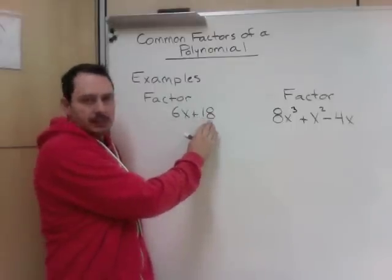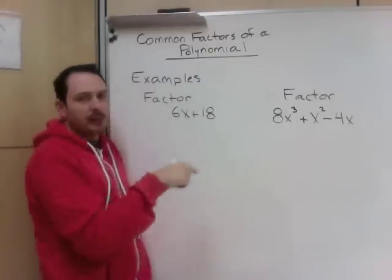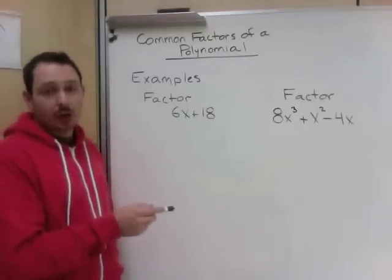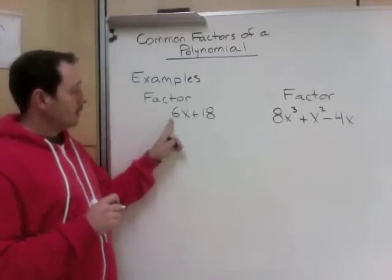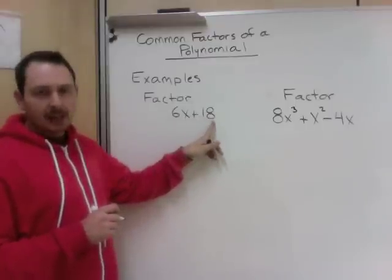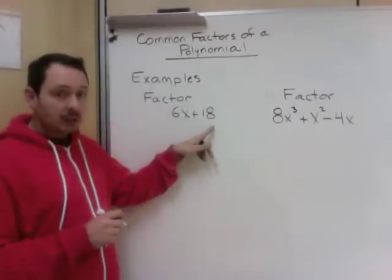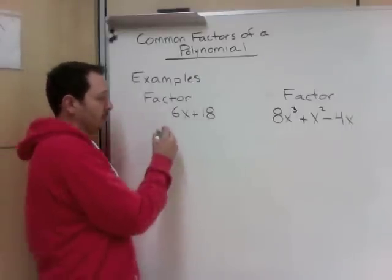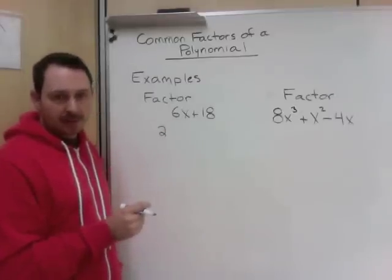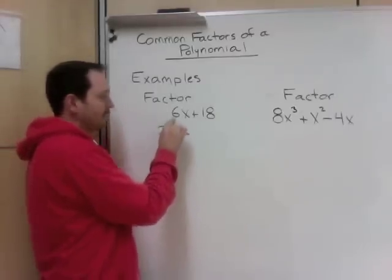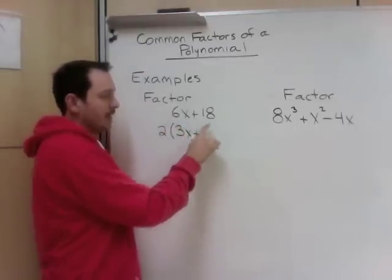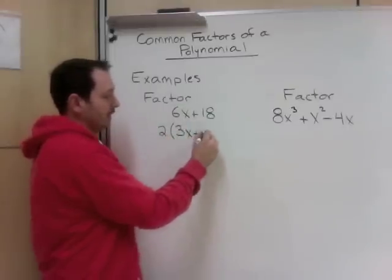What could we take out of these that we could multiply back in later to get the same answer? Because one of the keys to this is, if you can't get back to where you started, then you've done something wrong. So 6x and 18, and we need to compare numbers and letters. 6 and 18, they both divide by 2, so we could start there and divide by 2. So what I'm going to do is I'm going to take the 2 out of every single term. If I can't take it out of every single term, I'm doing something wrong. So if I divide 6x by 2, 6 divided by 2 is 3x, 18 divided by 2 is 9.